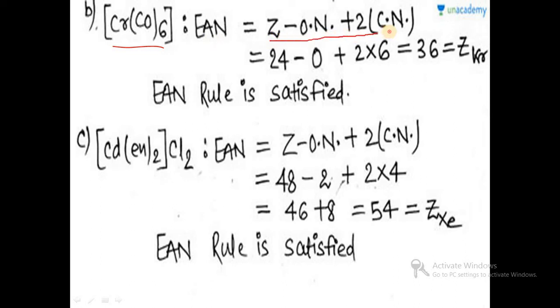For chromium hexacarbonyl, Cr(CO)6: EAN = Z − ON + 2 × CN = 24 − 0 + (2 × 6) = 36, which is the atomic number of krypton. So the effective atomic number is satisfactorily obeyed.